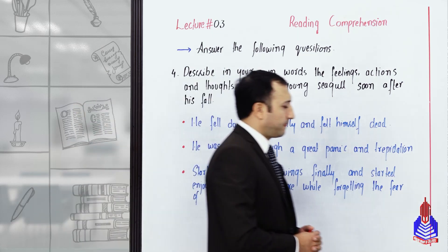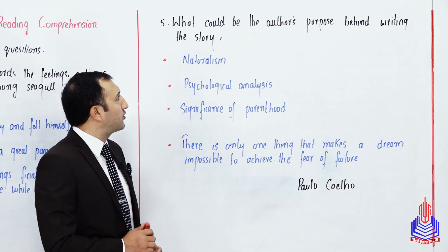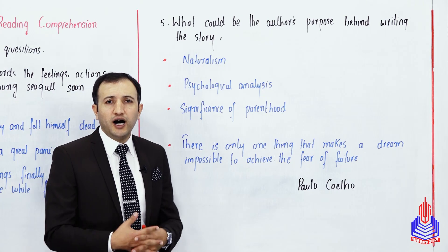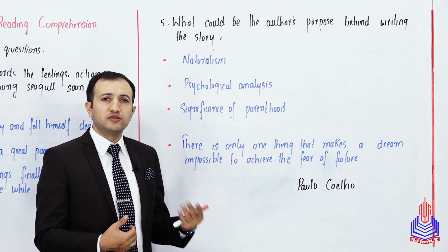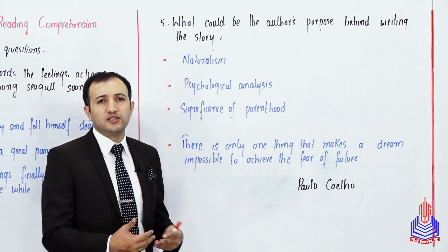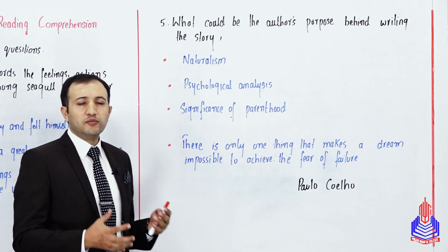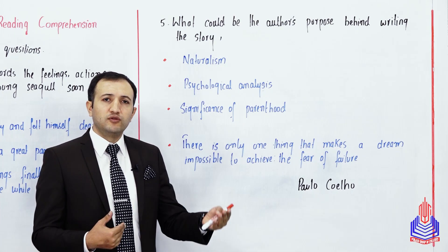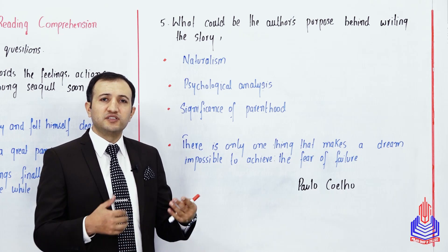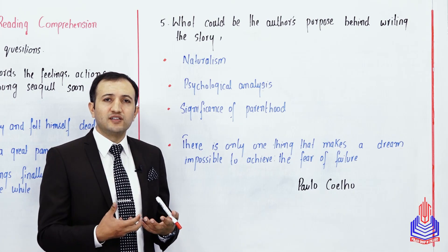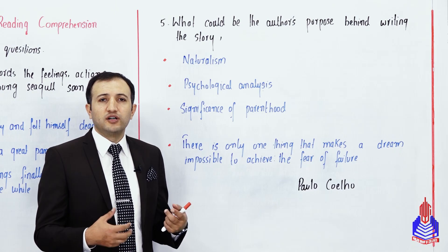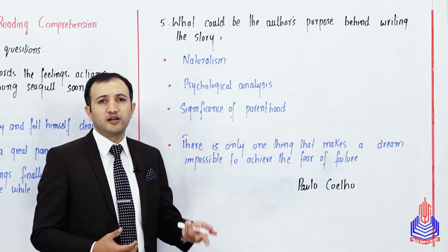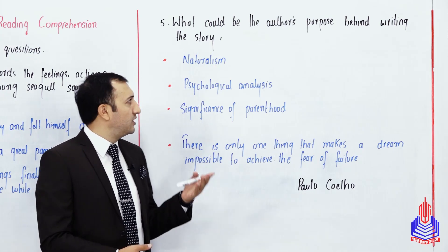Question number 5: what could be the author's purpose behind writing the story? He is an Irish novelist and if you look at his literary work, the same themes are represented. First purpose: naturalism — he shows you nature, a crystalline sea, seagulls and their life. In this lesson he has shown naturalism and explained how nature works, including the instinct of young seagulls to fly.